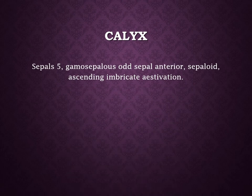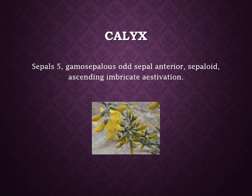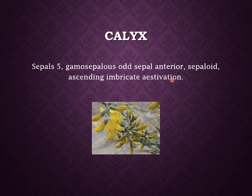The calyx consists of five sepals, and the sepals are united — that is, the gamosepalous condition is present. All the sepals are united to each other, so the sepals are gamosepalous or sepalous anterior with ascending imbricate aestivation. The sepals can be equal or unequal and are united below in a tube. Calyx is 5-toothed or 5-lobed and aestivation is ascending imbricate.